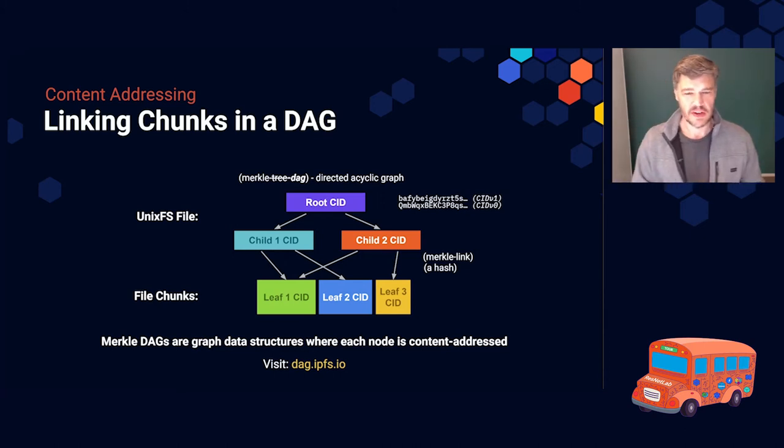So if we break it down, we can actually find six separate blocks in this graph. The root CID at the top there, it tends to be the CID that you'll share. You'll share around one address, either the QM, etc, etc, which is a CID V0, or the more modern CID V1, which B-A-F-Y, B-E-I, etc, etc. You'll share this around, but what that gets you is a graph, not just the whole file. You can use that to derive the root block, but that root block itself has links that point to additional blocks, which themselves point to the leaf data of the file.